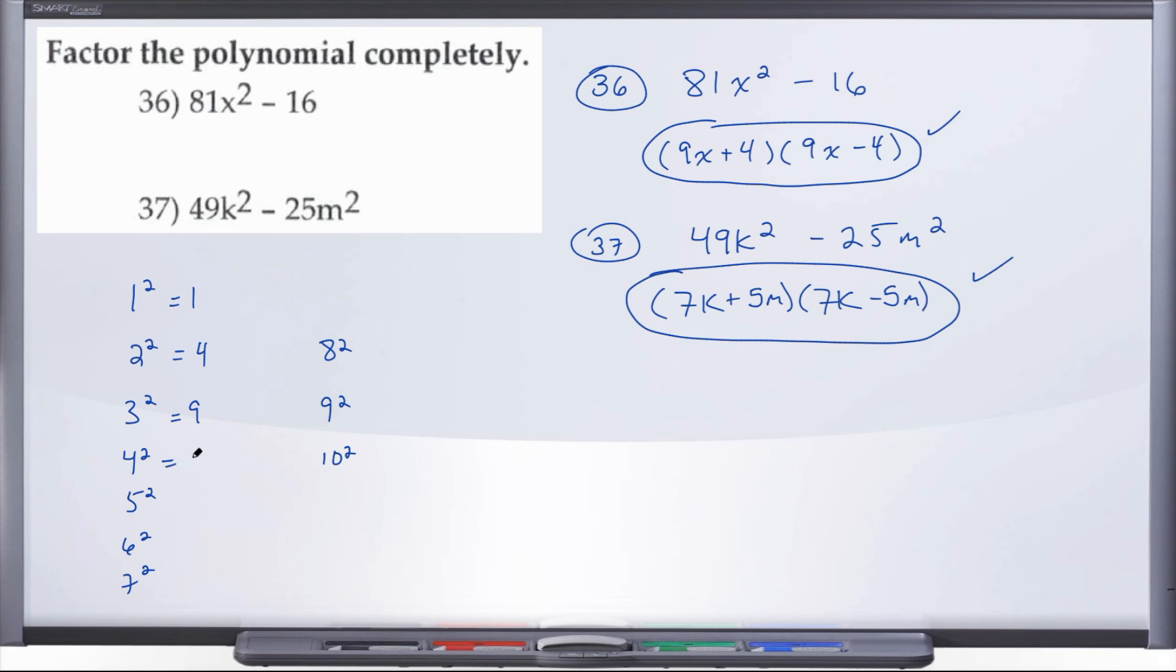So 4² is 16, then 25, 36, 49, 64, 81, and 100. When you are dealing with two terms, the difference of squares, you want to be on the lookout for these numbers because these are perfect square numbers. As soon as you see these in one of your two-term problems, hopefully some alarm bells are going off saying, oh, difference of perfect squares. Try to memorize those because they're going to come up a lot. All right, so that was 36 and 37.